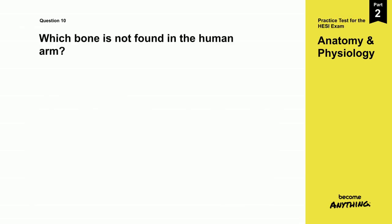Question 10. Which bone is not found in the human arm? A. Ulna. B. Radius. C. Humerus. D. Femur.